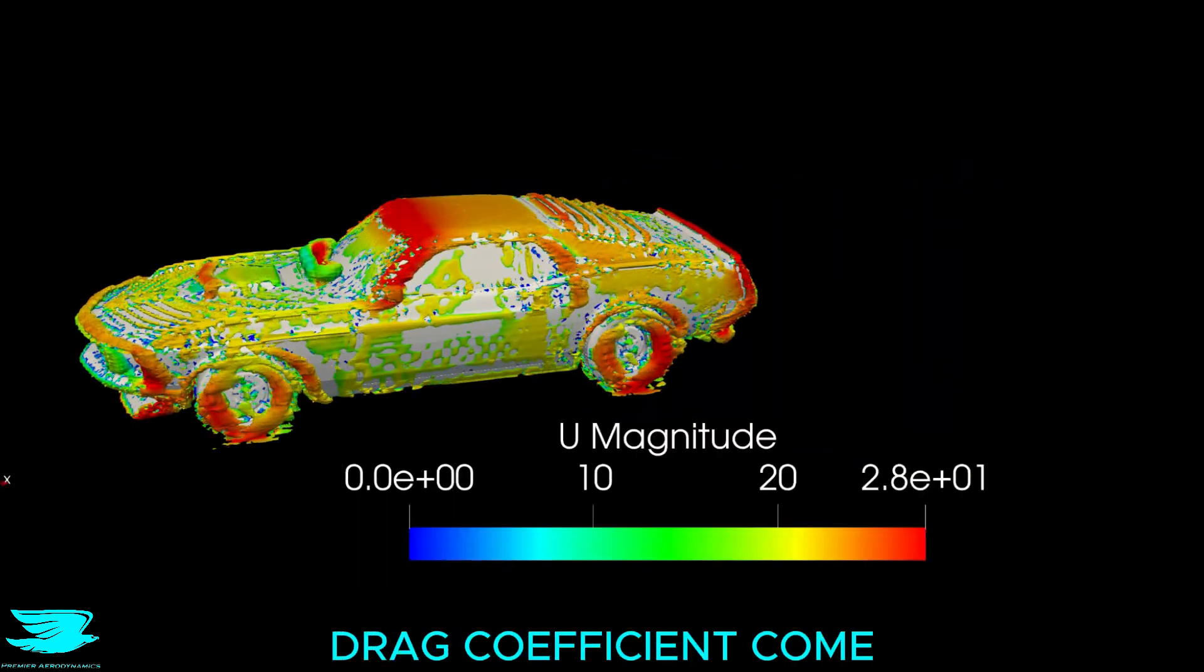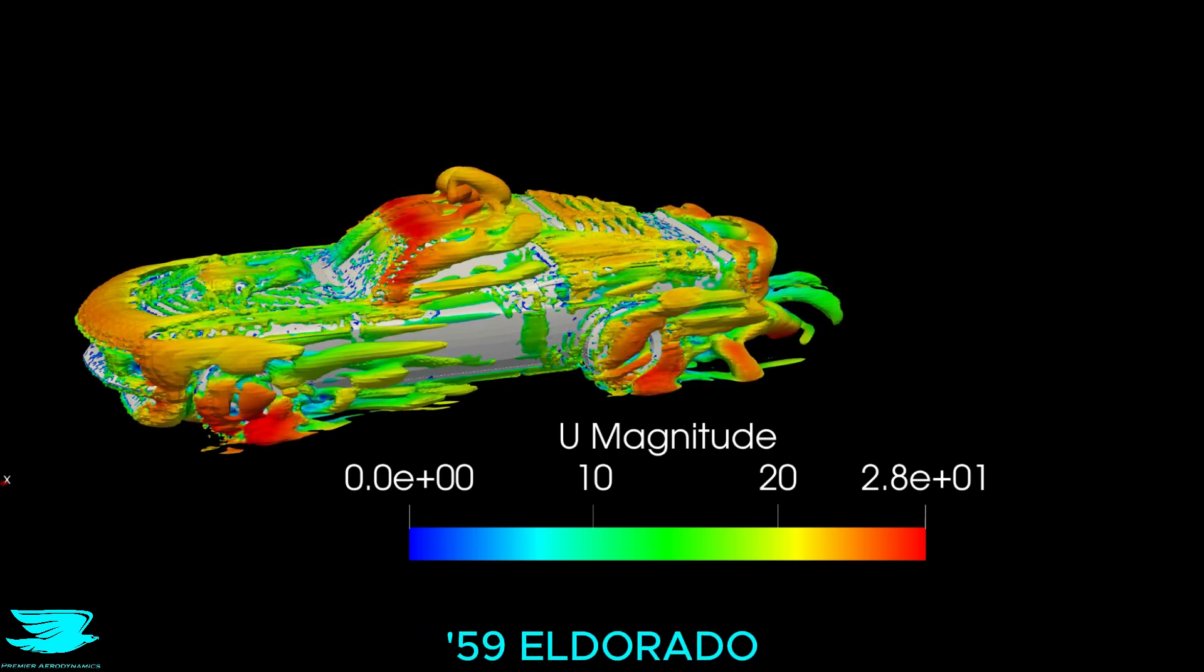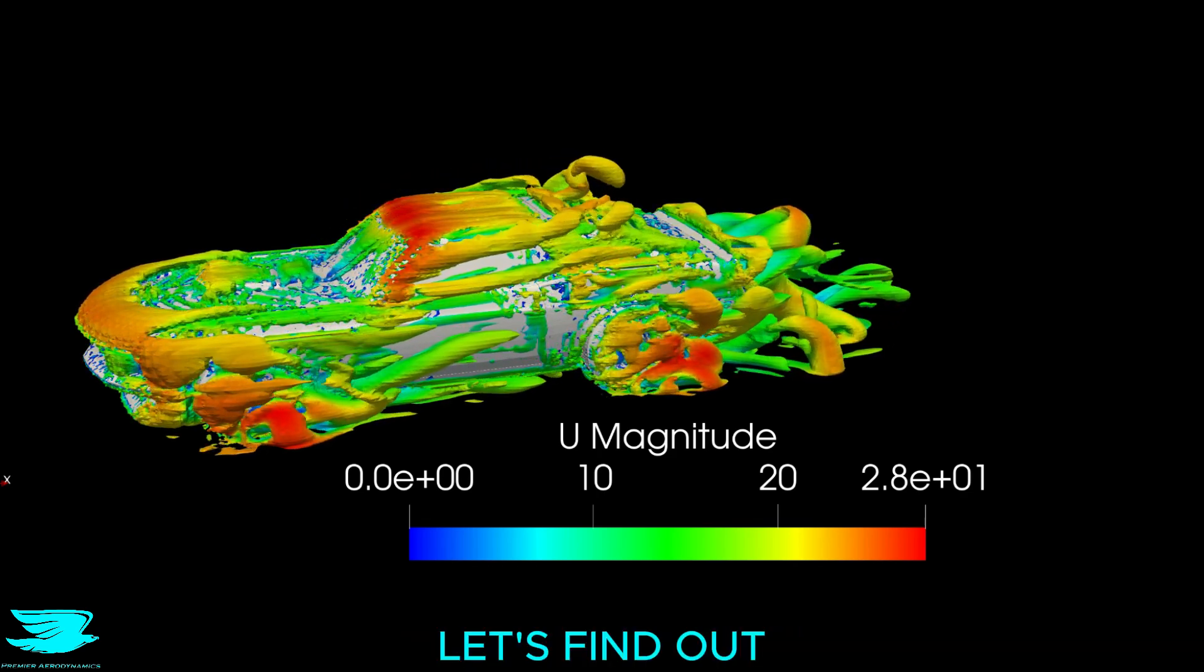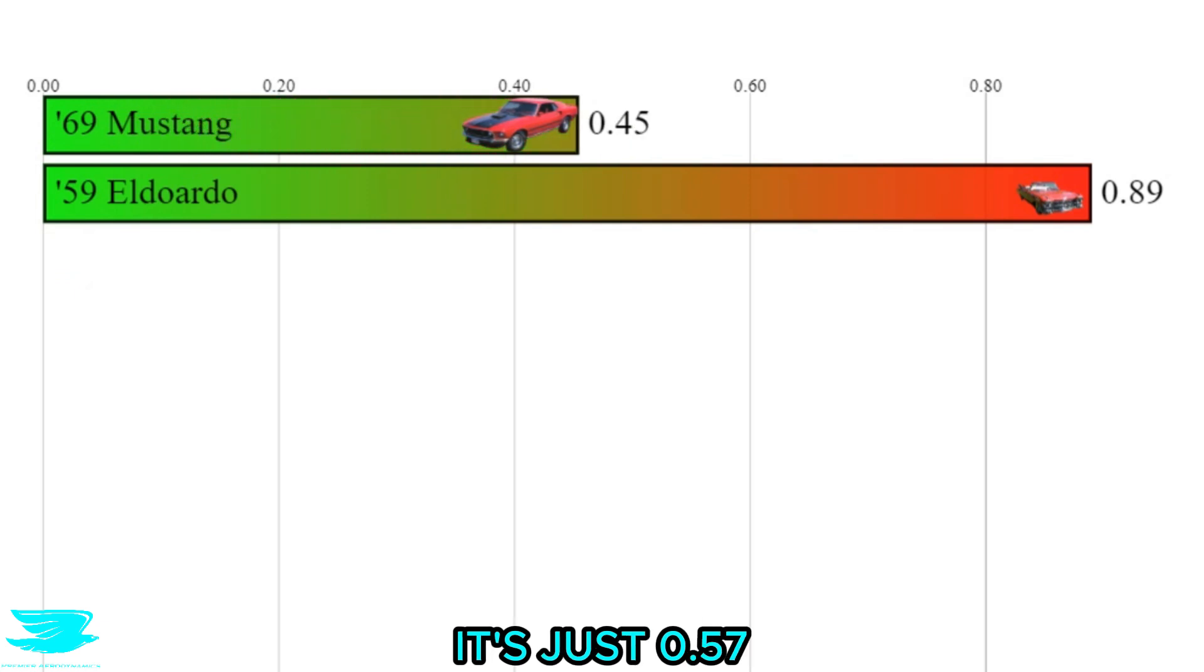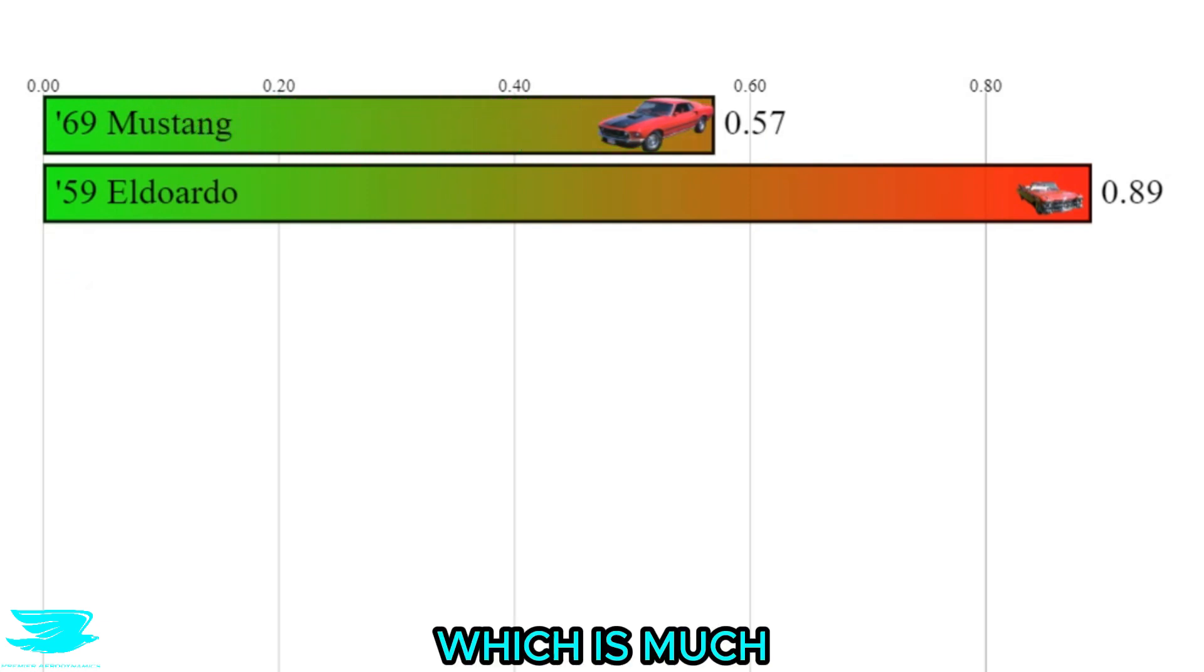So what does this drag coefficient come out to be? And how does it compare to the 59 Eldorado we tested a few weeks ago? Let's find out. It's just 0.57, which is much better than the Cadillac.